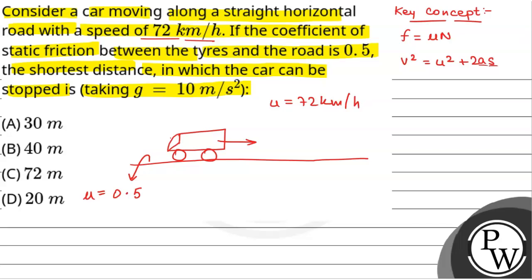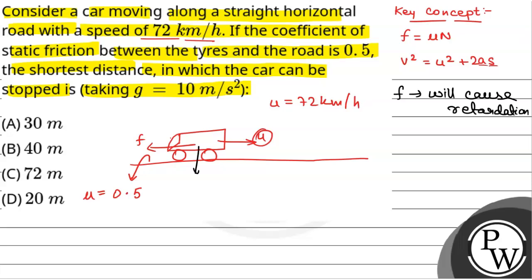If the car is moving in this direction with velocity u, friction will be acting in the opposite direction. Since friction is the only force, it will cause retardation. The frictional force equals mu into N. Since N is the normal reaction equal to the weight of the car, which is mg, the frictional force equals mu mg.